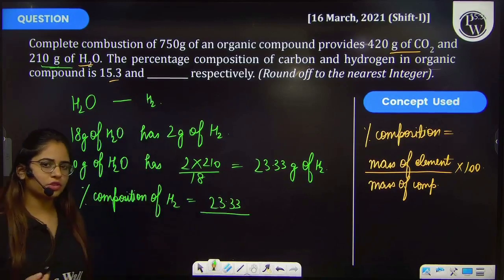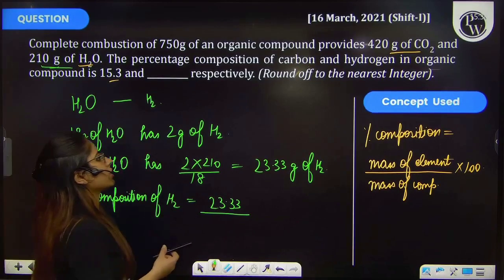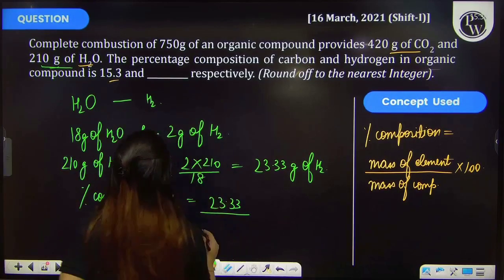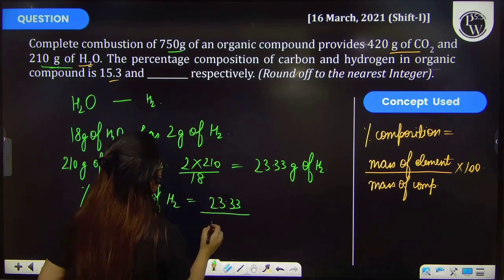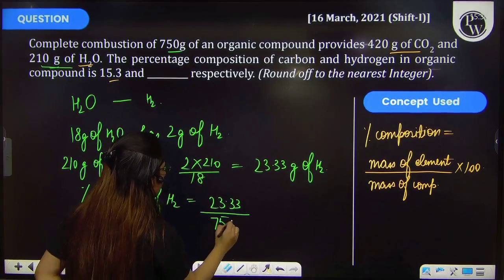divided by the total mass of the compound, that is 750g, multiplied by 100.